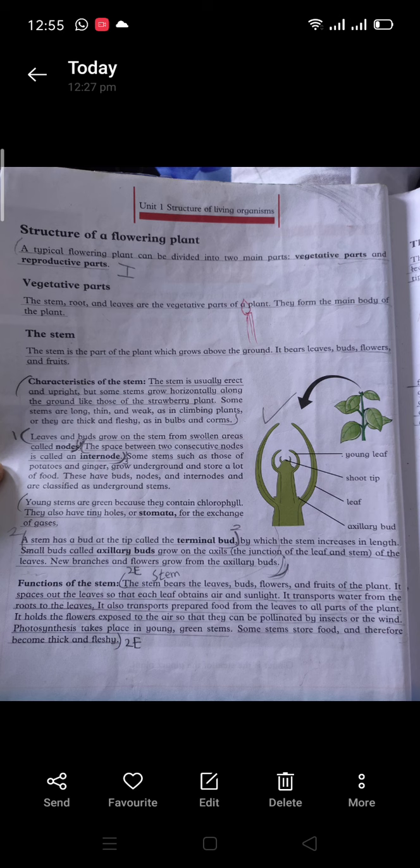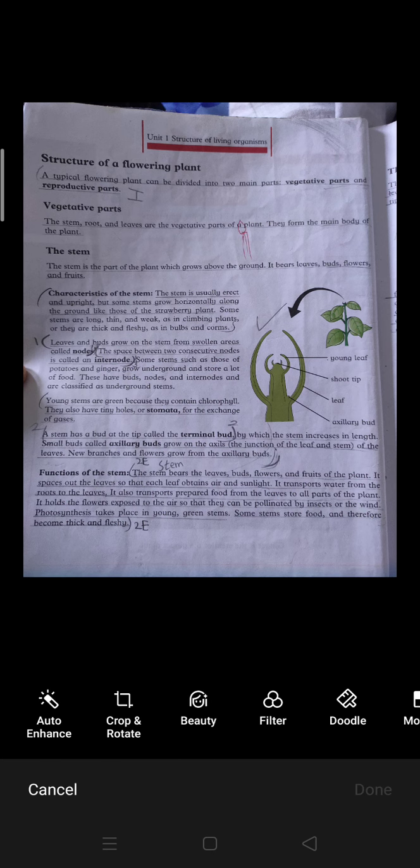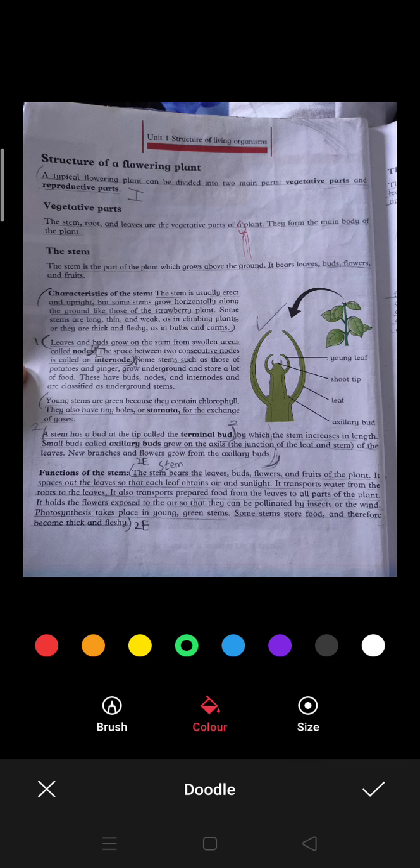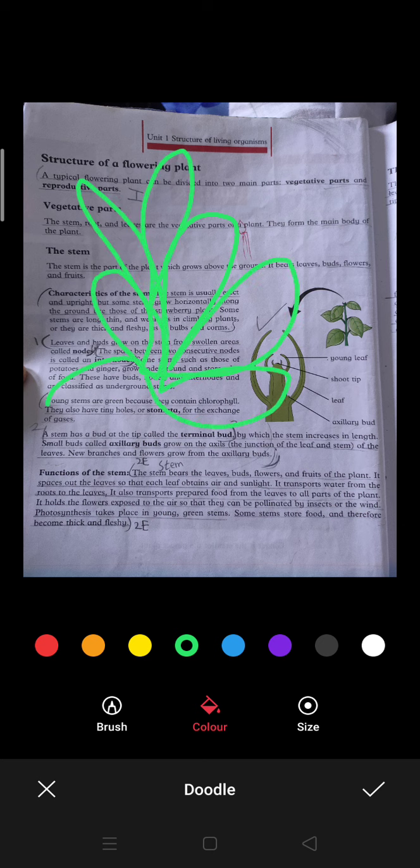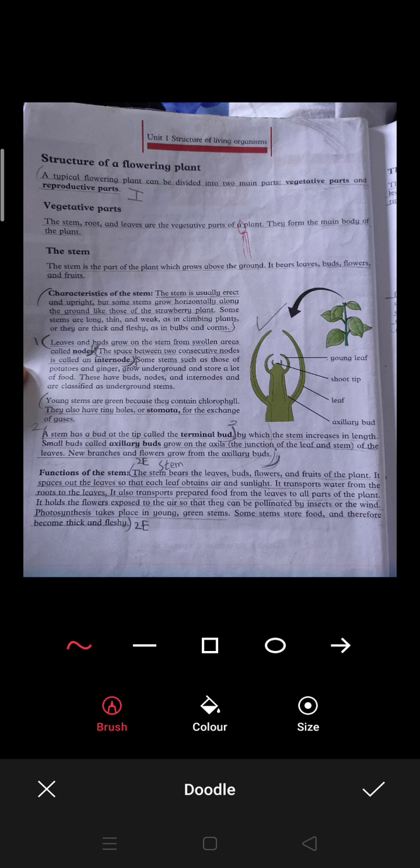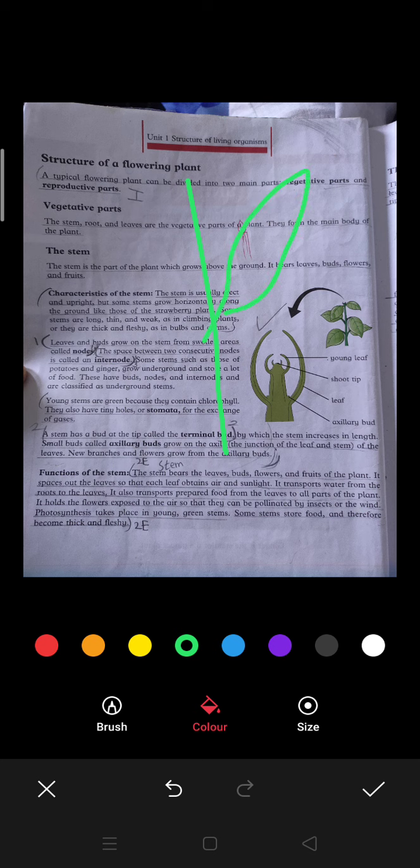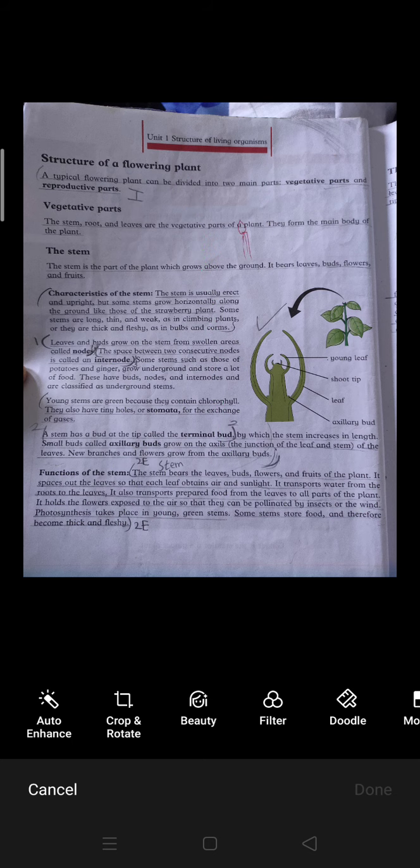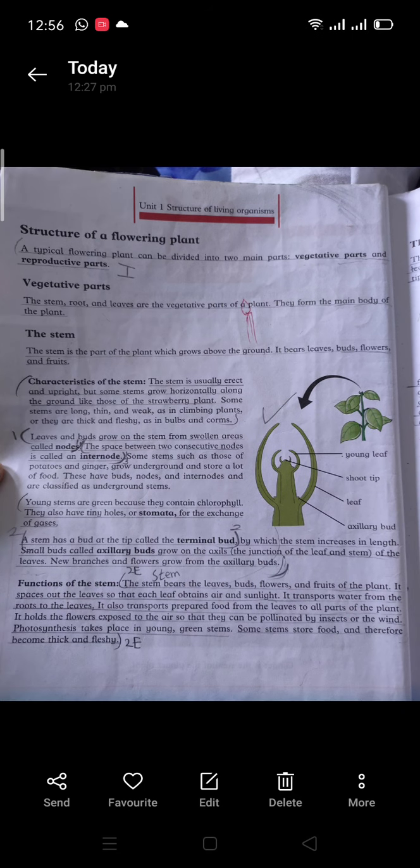Functions of a stem: The stem has uncountable functions. It is really very necessary for a plant. The stem bears leaves, buds, flowers, and fruits of a plant. It spaces out the leaves so that each leaf obtains air and light. You have never seen that the leaves are mixed.